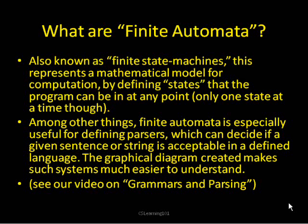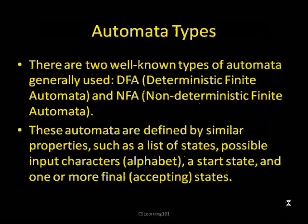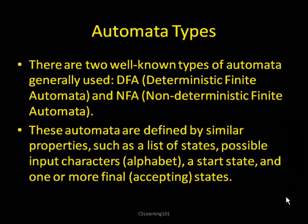There are two well-known types of finite state machines: DFA and NFA. DFA stands for Deterministic Finite Automata, and NFA stands for Non-Deterministic Finite Automata. These are defined by similar properties, such as they both have a list of states, possible input characters or an alphabet, a start state, and at least one or more final acceptance state.